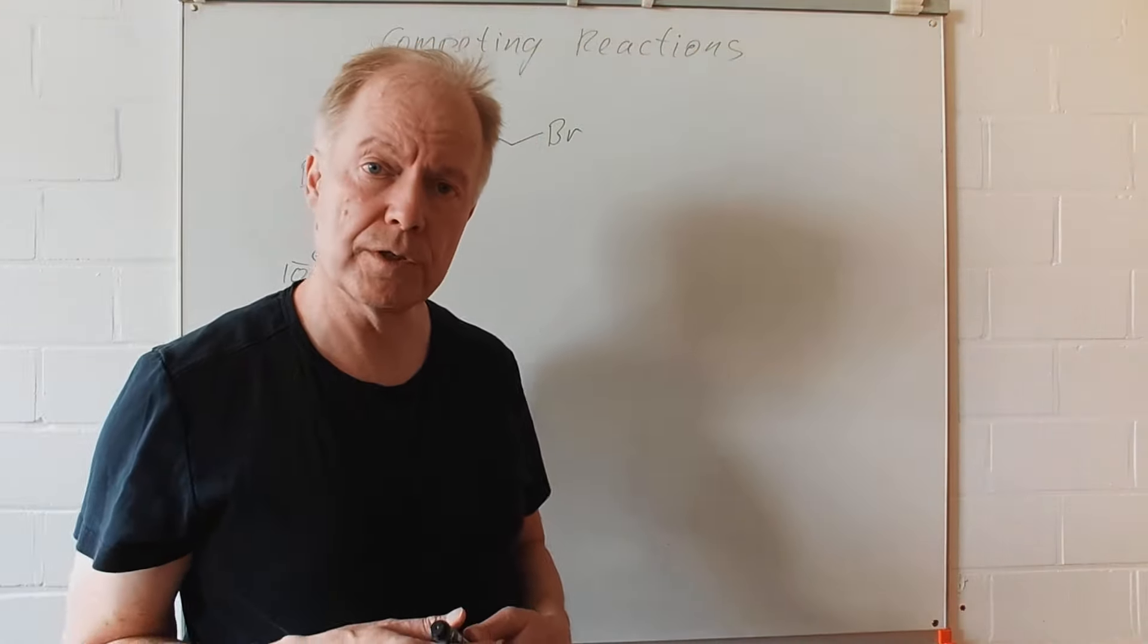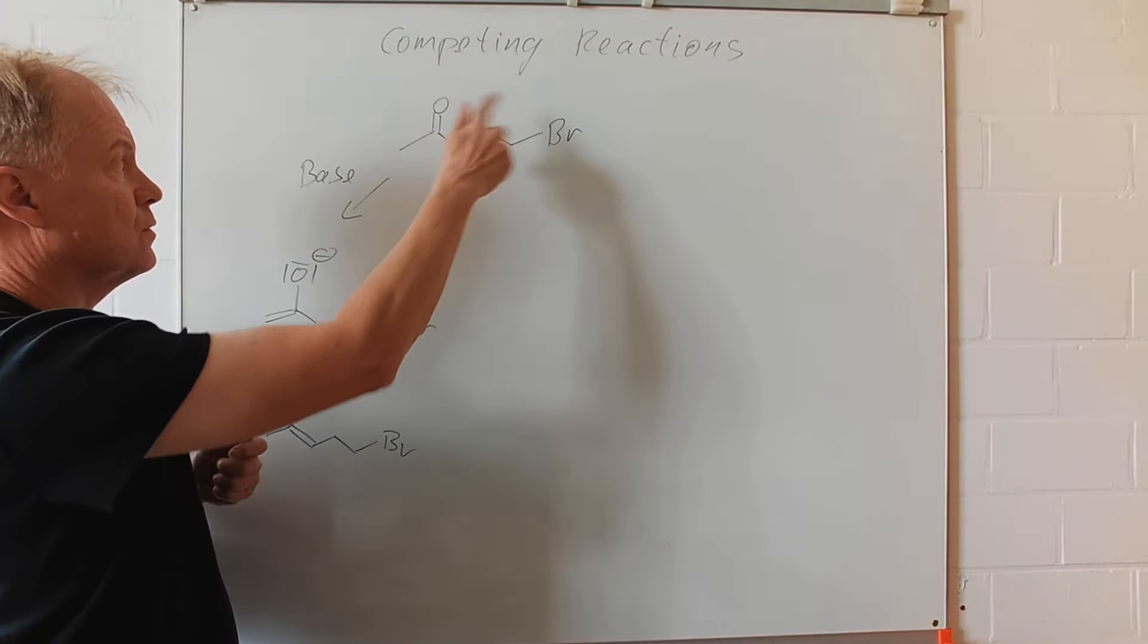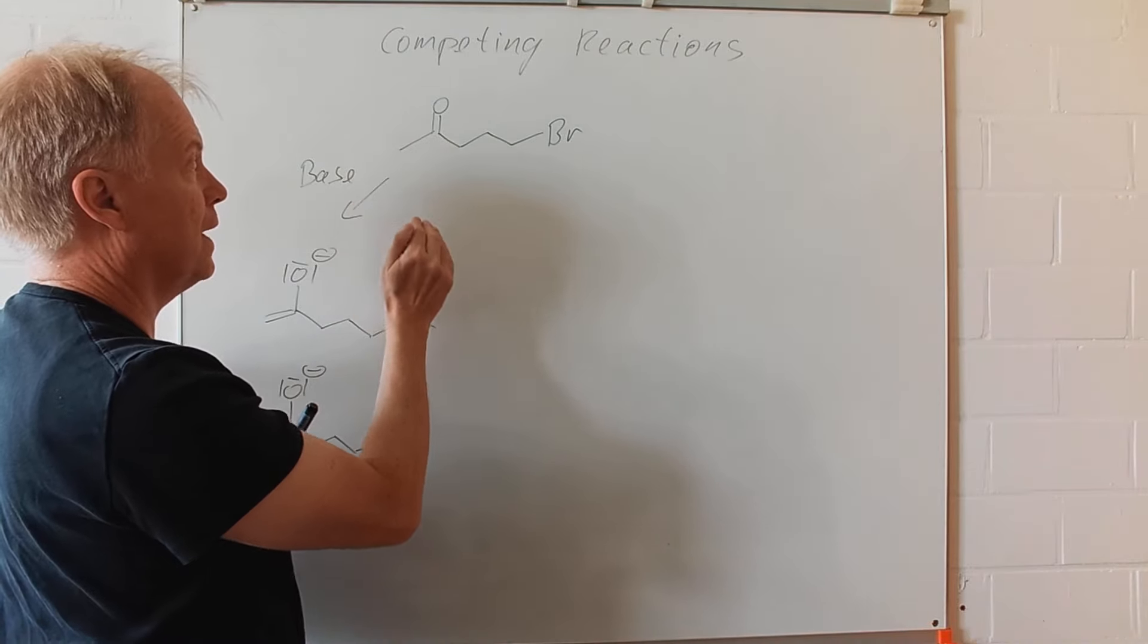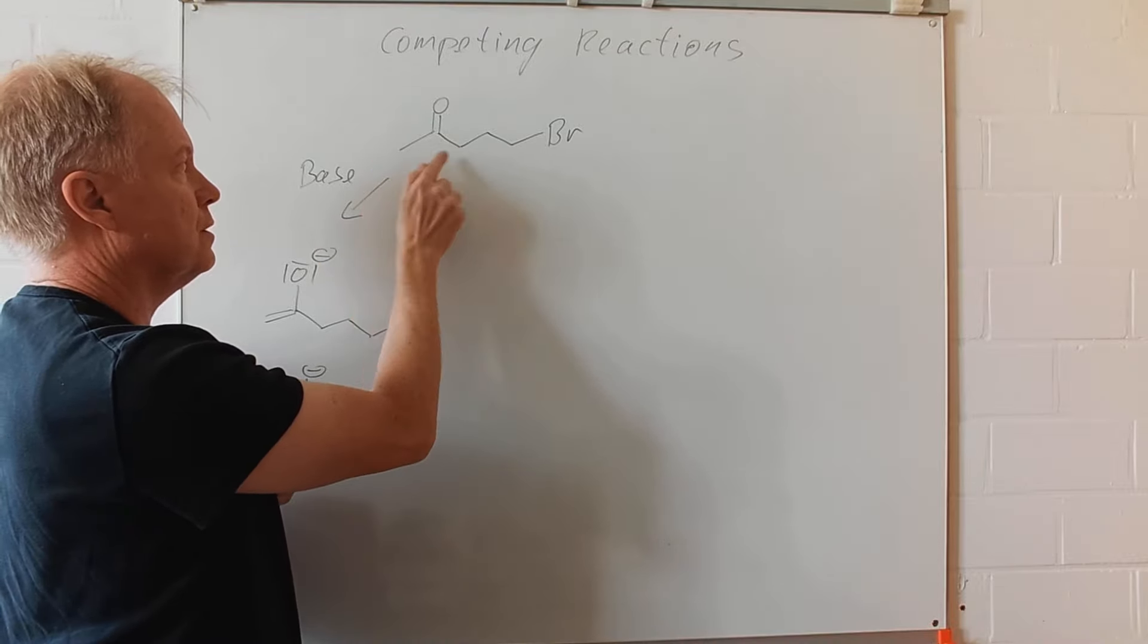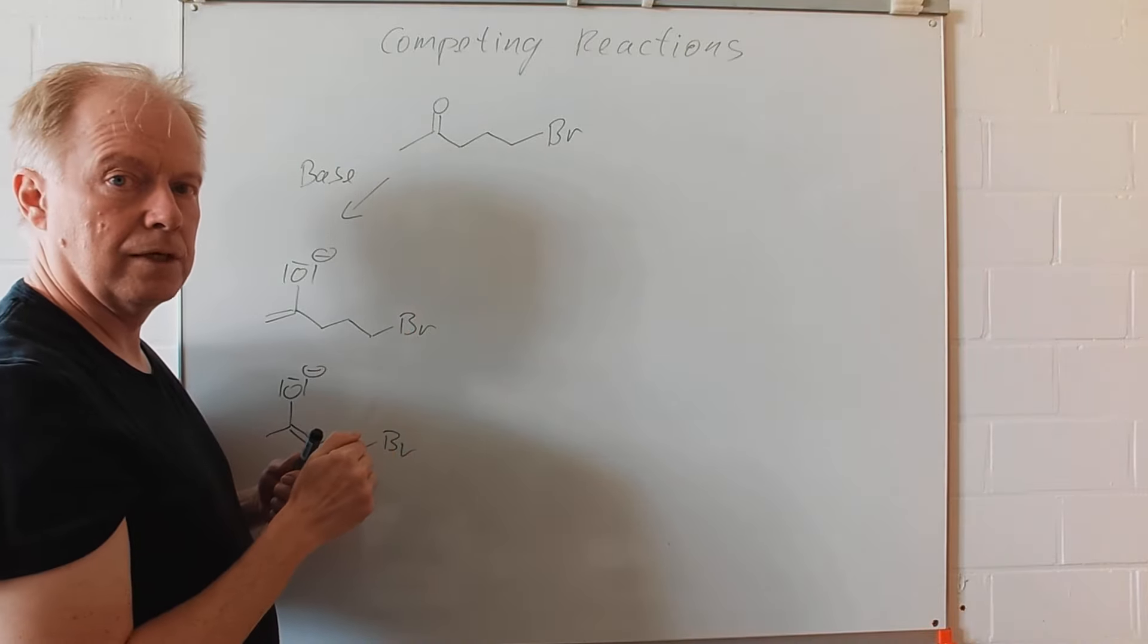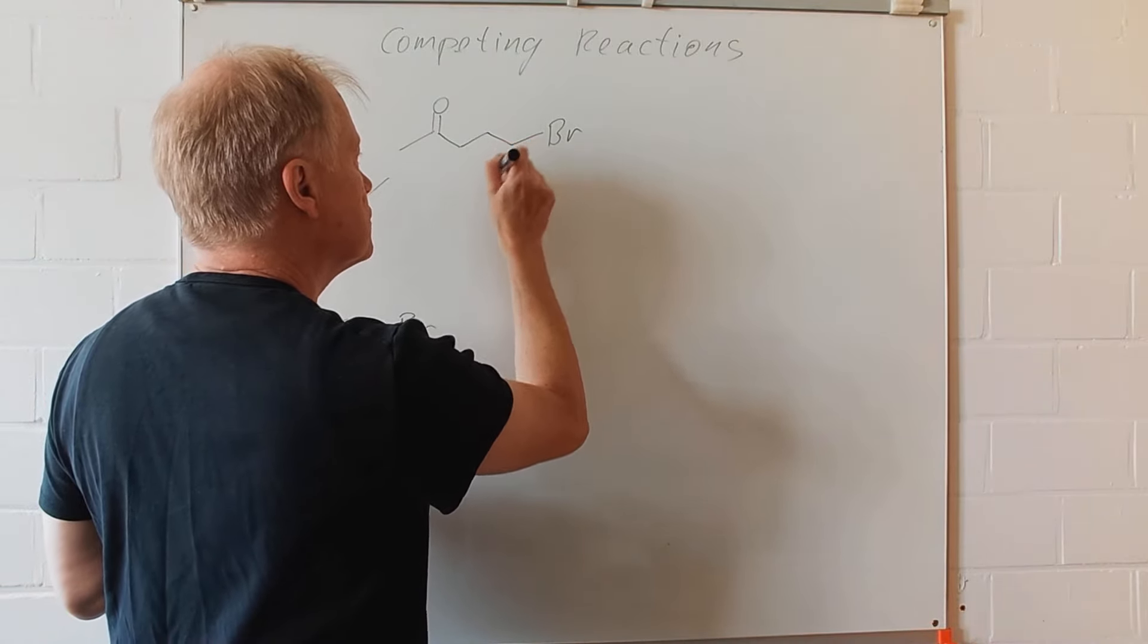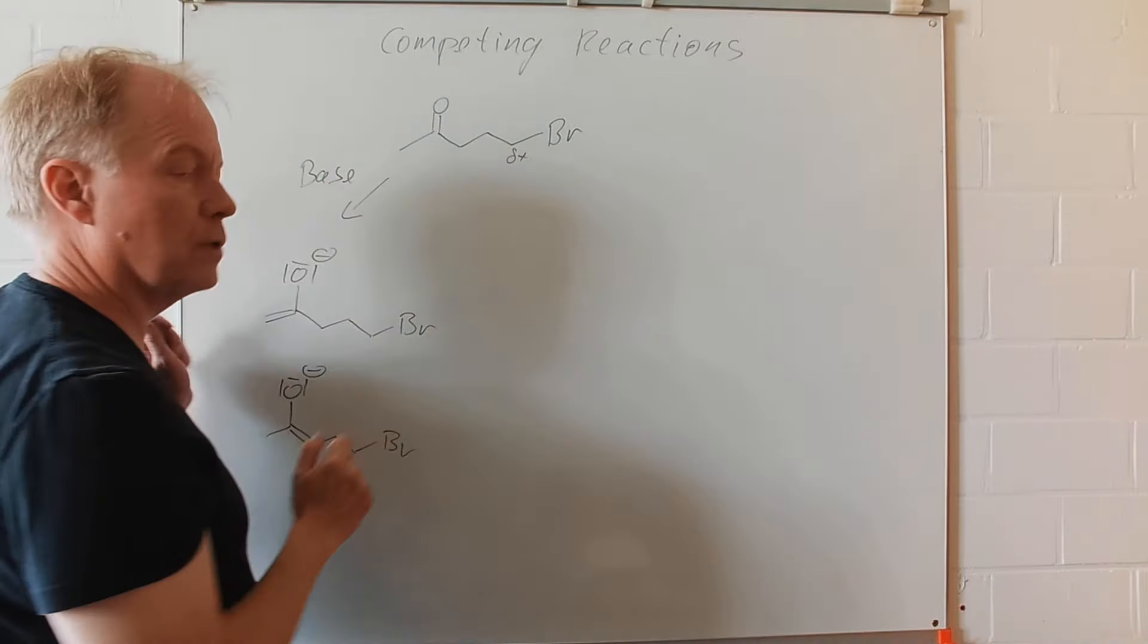In today's tutorial we will have a look at a nice example of competing reactions. Here we have our starting material with carbonyl group, and the carbonyl group has especially acidic protons in alpha position here and there. In the side chain we have bromide which is a good leaving group for nucleophilic substitution, since here at this position we then have a positively polarized carbon.